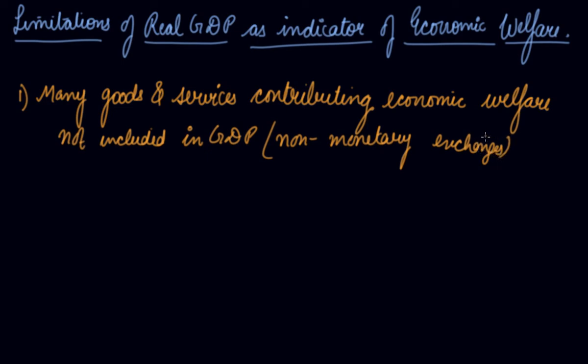There are many goods and services which are left out from the estimation of national income on account of practical estimation difficulties. Like the services of the housewife you cannot write in monetary terms, you cannot convert the services of the housewife into monetary terms. So you do not take these non-monetary exchanges into the GDP. These are also somewhere helping the welfare of the economy, but these are not included while calculating the national income or gross domestic product. So this is the limitation.